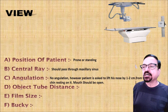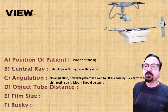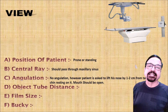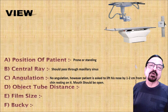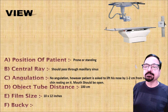There should not be any angulation. The patient is asked to lift the nose by one to two centimeters from the table with the chin resting on it. The mouth should be open to visualize the sphenoid sinus. The distance should be 100 centimeters, and the film size should be 10 by 12 inches.